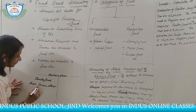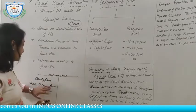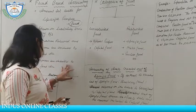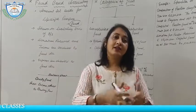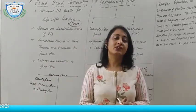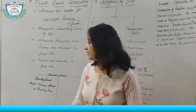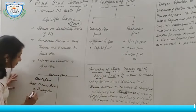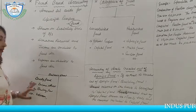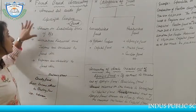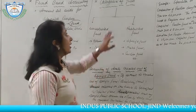Any income related to a specific fund is added to that fund account, and expenses related to that fund are deducted from it. For example, if the fund is for building construction, the construction material expenditure will be charged from that fund — income is added and related expenses are deducted. Funds are always shown on the liability side of the balance sheet.